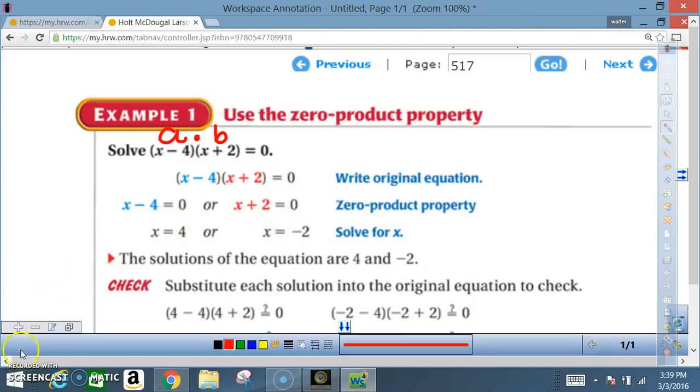So a times b equals 0. That means the a has to be 0 or the b has to be 0. If that's the case, you can solve for x, also called the roots of the equation. So the roots here would be 4 and -2.